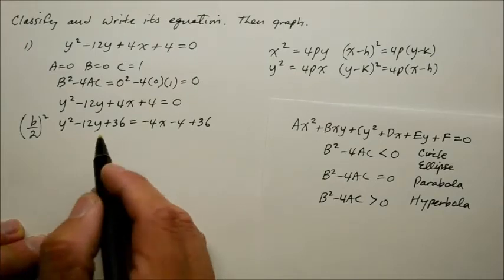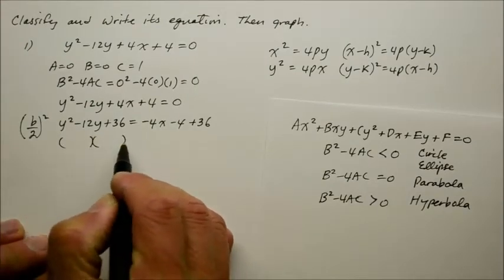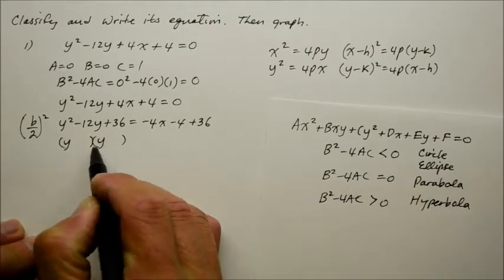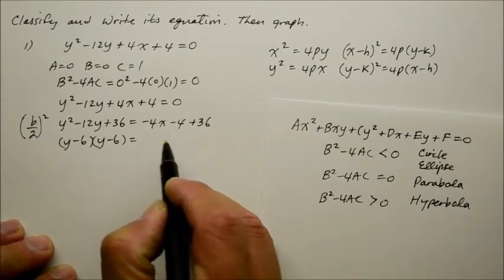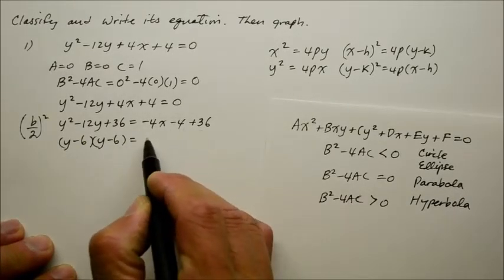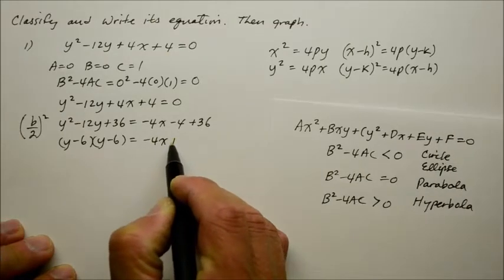Now I am able to factor the left side of the equation, which becomes a special product property, minus 6, minus 6. And on the right side, we're going to evaluate the constants, so we get negative 4x plus 32.